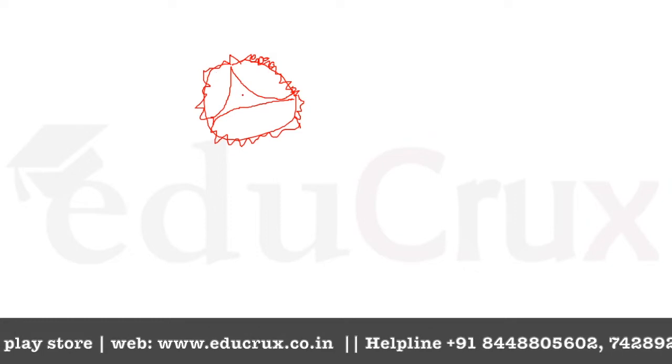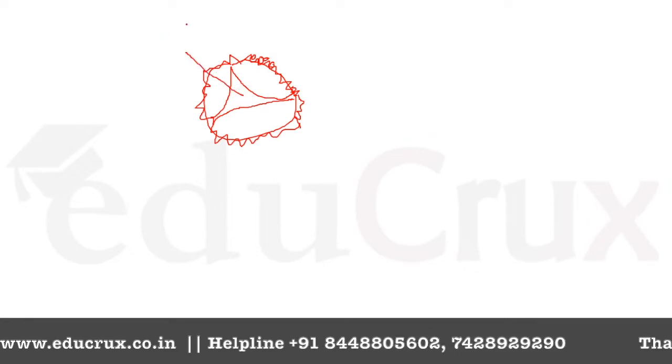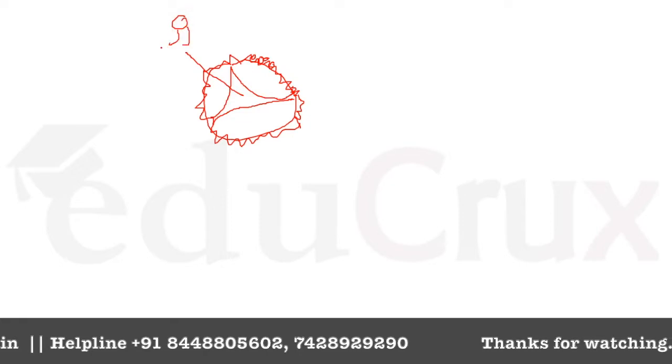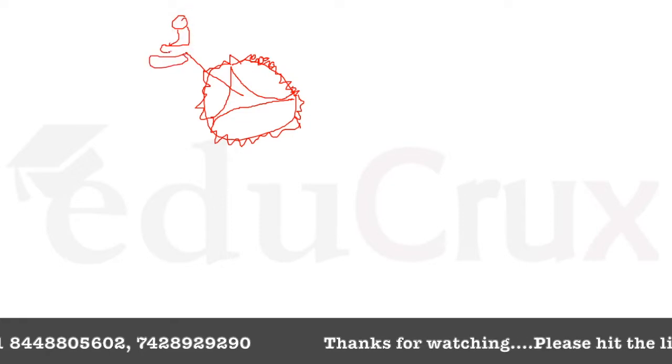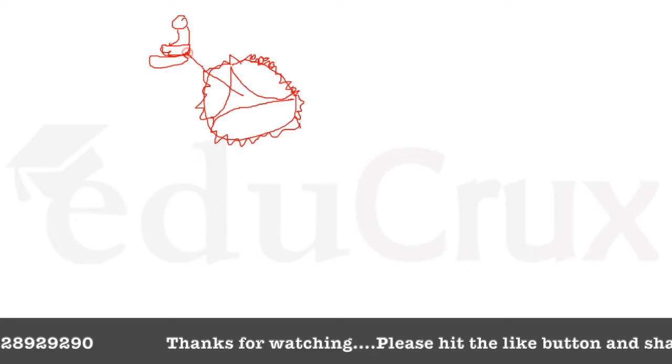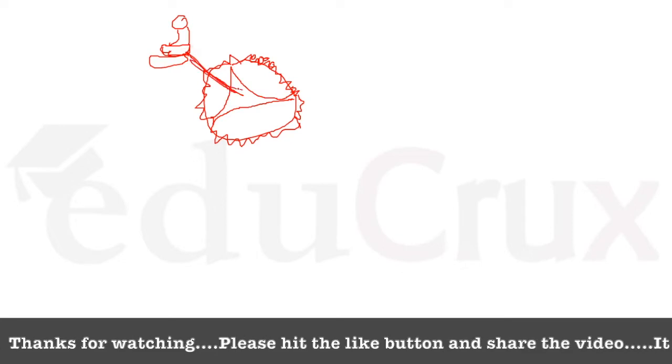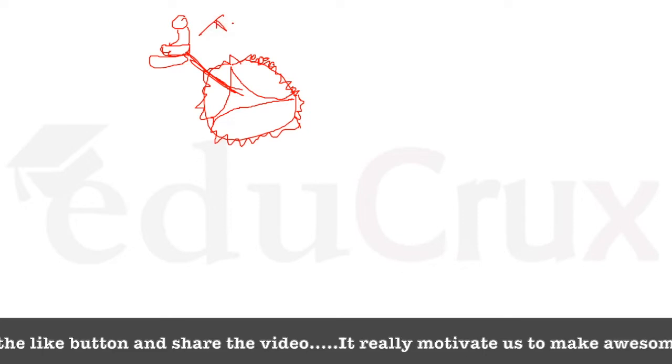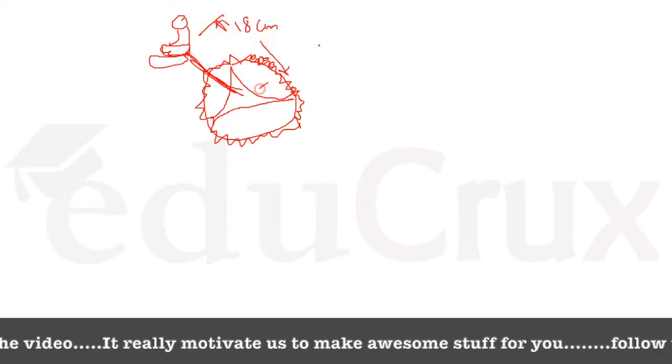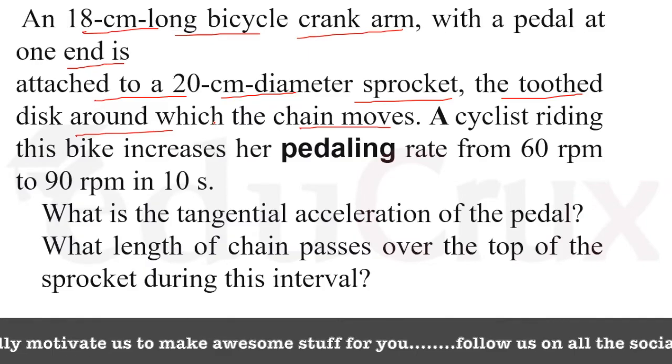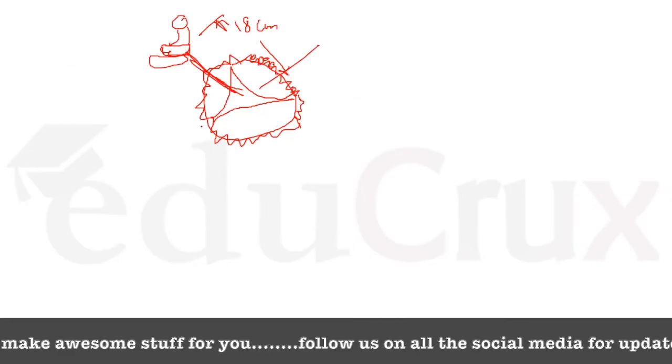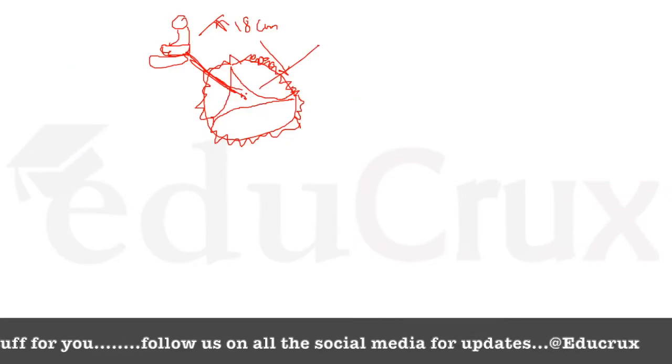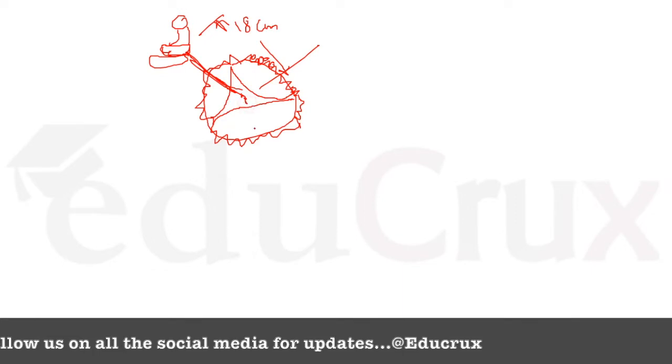So the chain basically goes inside this and comes out and that actually makes our cycle move. So we have this kind of figure and this is our leg on a pedal. We are given in this question that this length is 18 cm and 20 cm diameter. So the diameter of this sprocket is 20, so the radius is 10 cm.